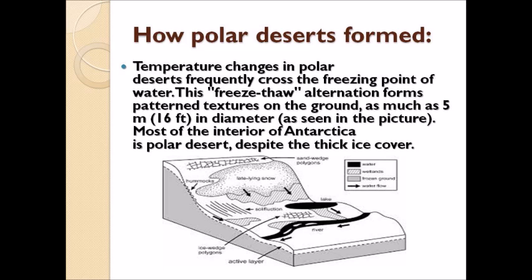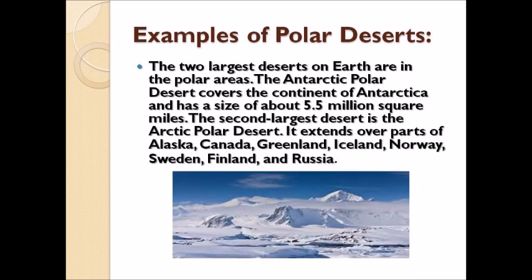Most of the interior of Antarctica is polar desert despite the thick ice cover. The two largest deserts on Earth are in the polar region. The Antarctic polar desert covers the continent of Antarctica and has a size of about 5.5 million square miles. The second largest is the Arctic polar desert, which extends over parts of Alaska, Canada, Greenland, Iceland, Norway, Sweden, Finland, and Russia.